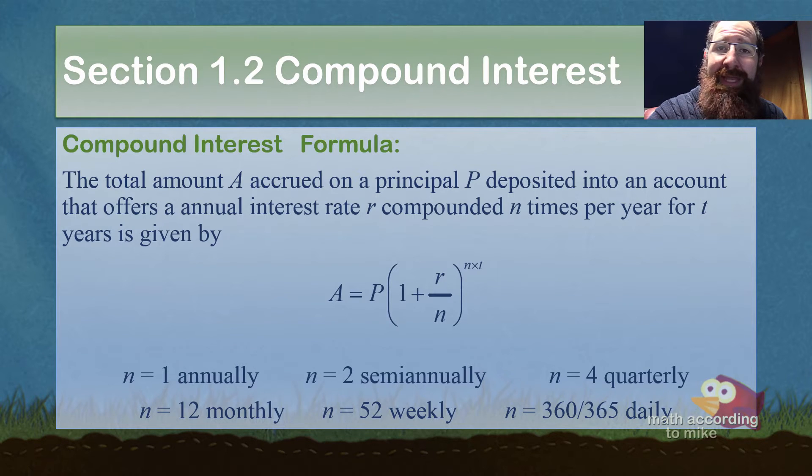We have a new letter, that letter being n, and depending on how it says it's being compounded, meaning how often it earns interest, affects the letter n. So the last two lines there, we have six different values for n that we'll discuss. n equaling 1 means annually, once a year; n equaling 2, semi-annually, twice a year.